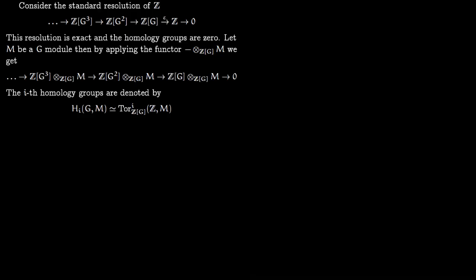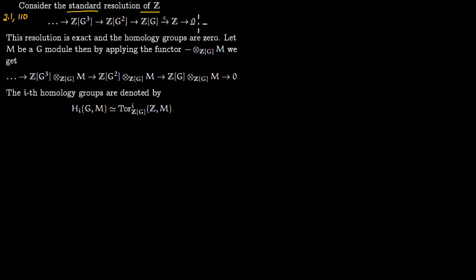In this lecture we talk about homology of groups. We start with the standard resolution of integers. This resolution we have seen before, but you can also think of it as essentially coming from singular homology. You can find this in section 2.1 of Hatcher's Algebraic Topology — in the book I have, it is on page 110. There you have the same complex with C₀, C₁, C₂, and so on.